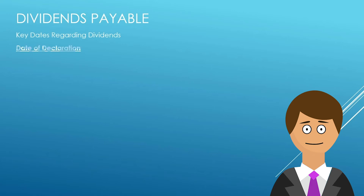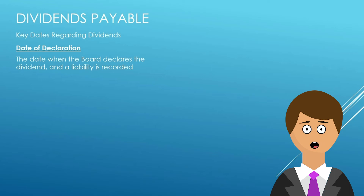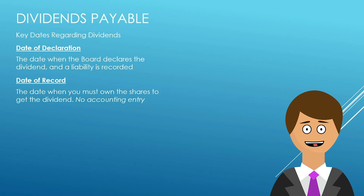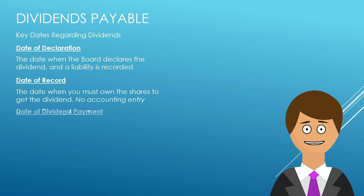The key dates include the date of declaration — that's when the board of directors gets together and says they're going to pay a dividend to all of their shareholders, so a liability is recorded based on those outstanding shares. Another important date is the date of record — the date when you must own those shares to get the dividend. There is no accounting entry for the date of record. But with stocks changing hands every day on the New York Stock Exchange, NASDAQ, and different exchanges, when you declare that dividend you set a date by which you must own the shares if you're going to receive it. So you've got to own the shares on that date of record.